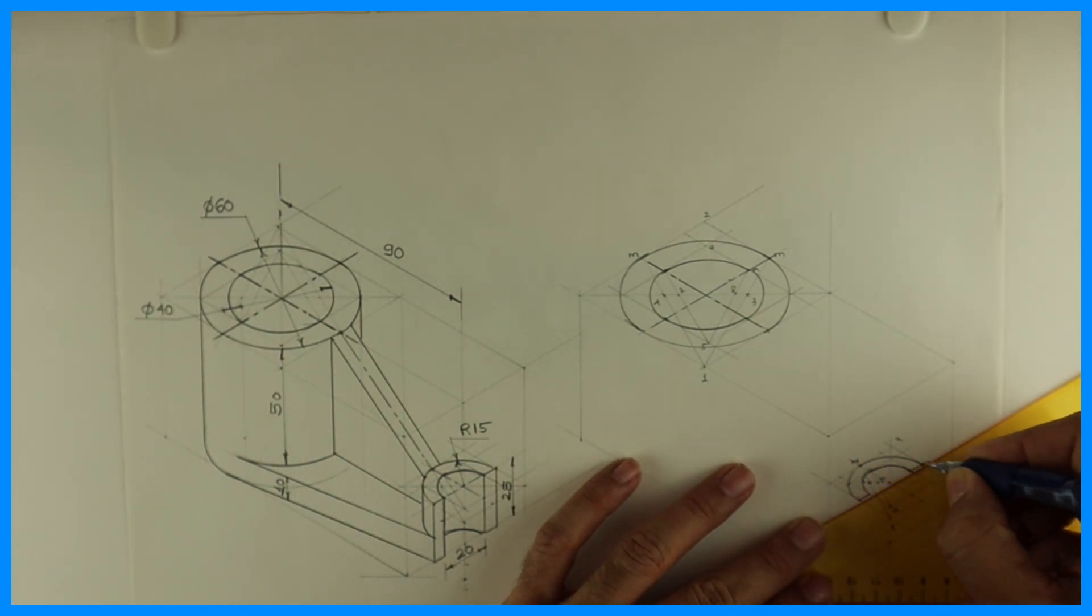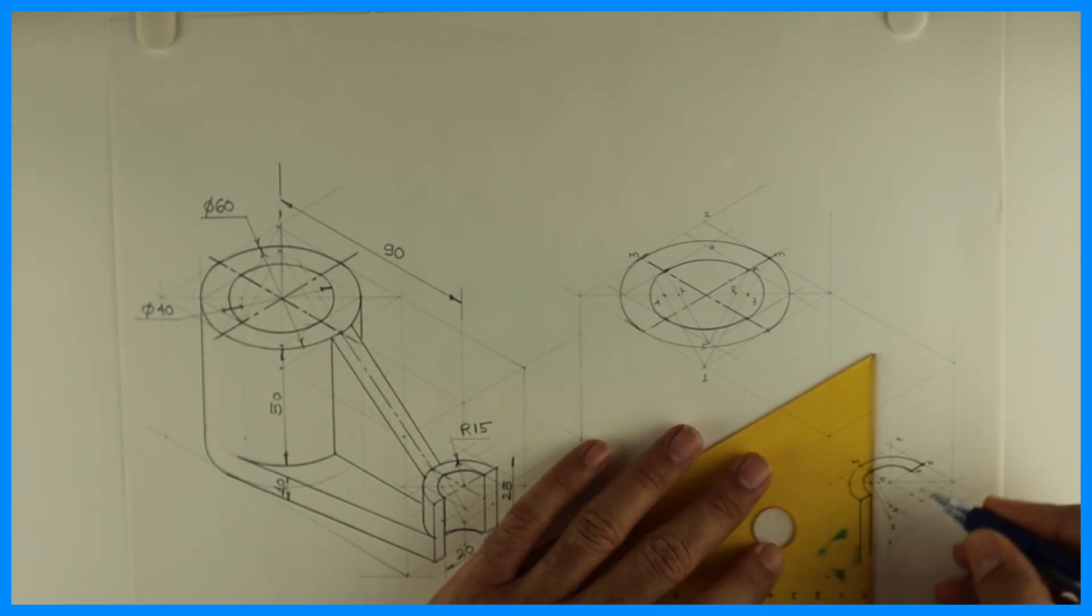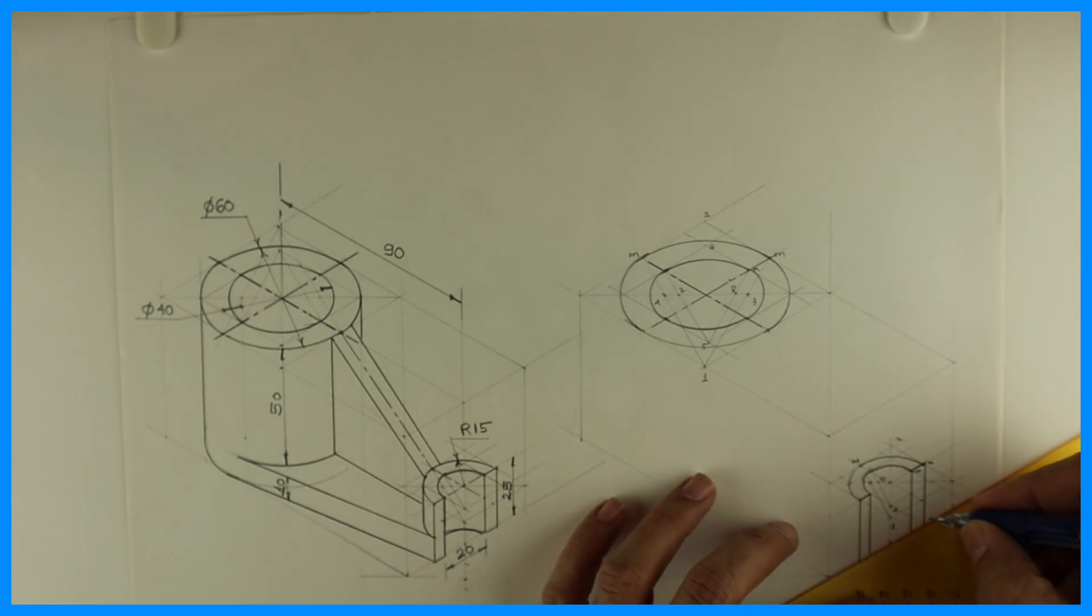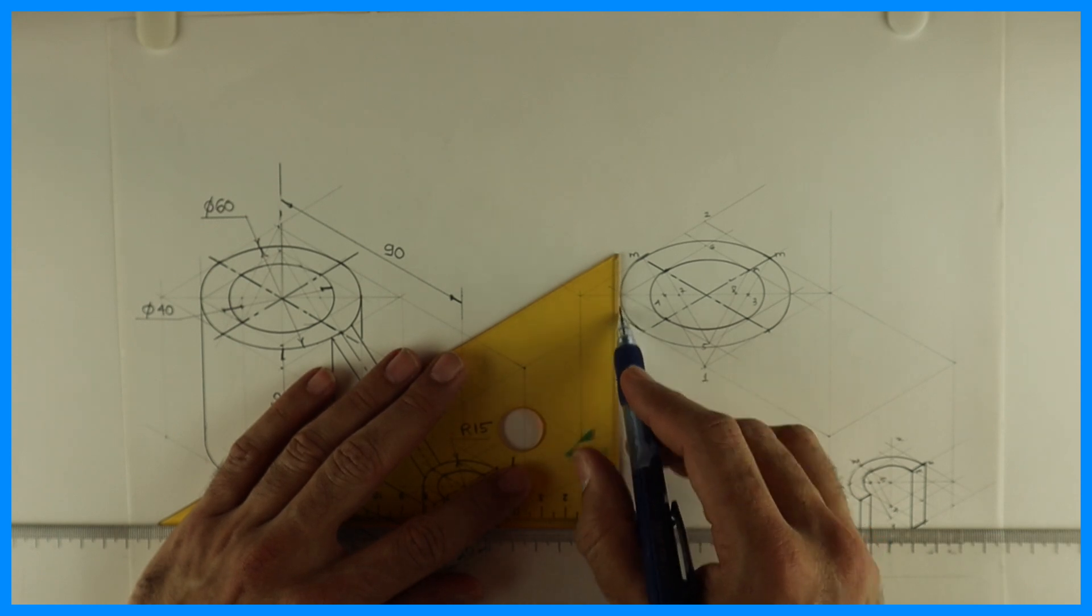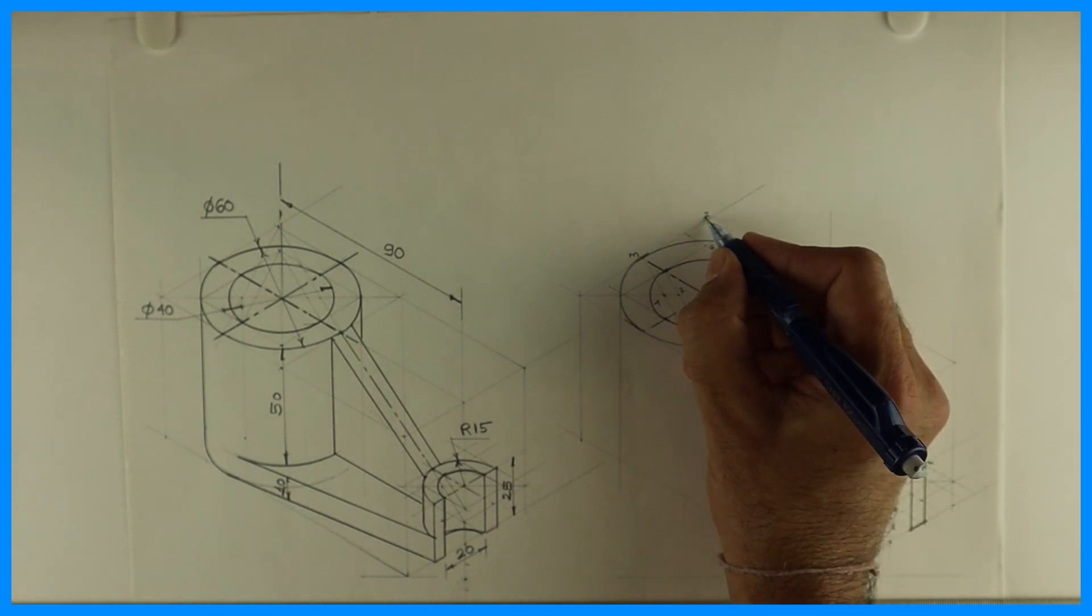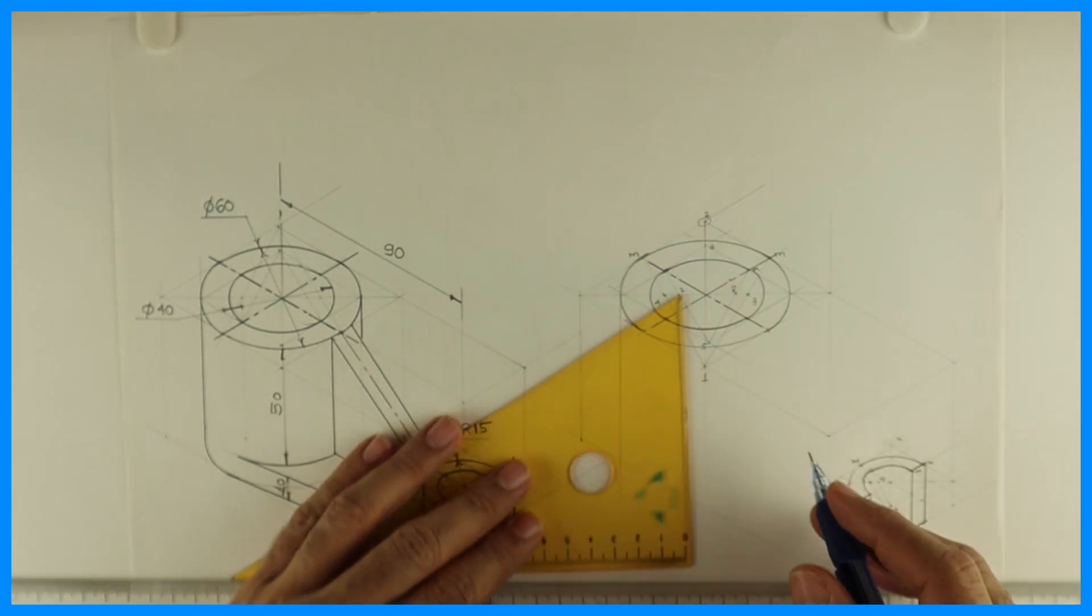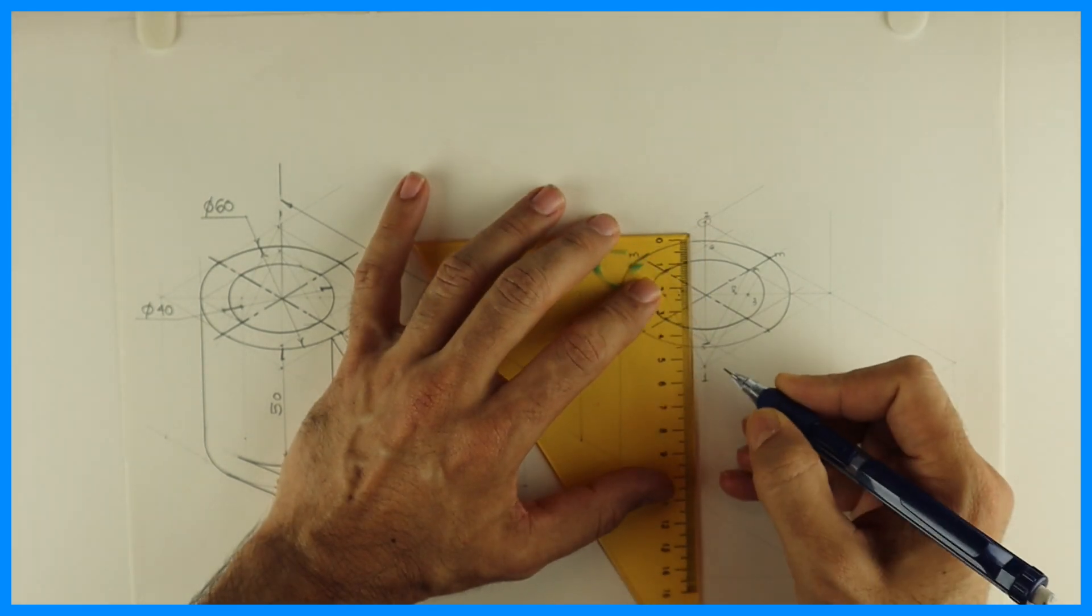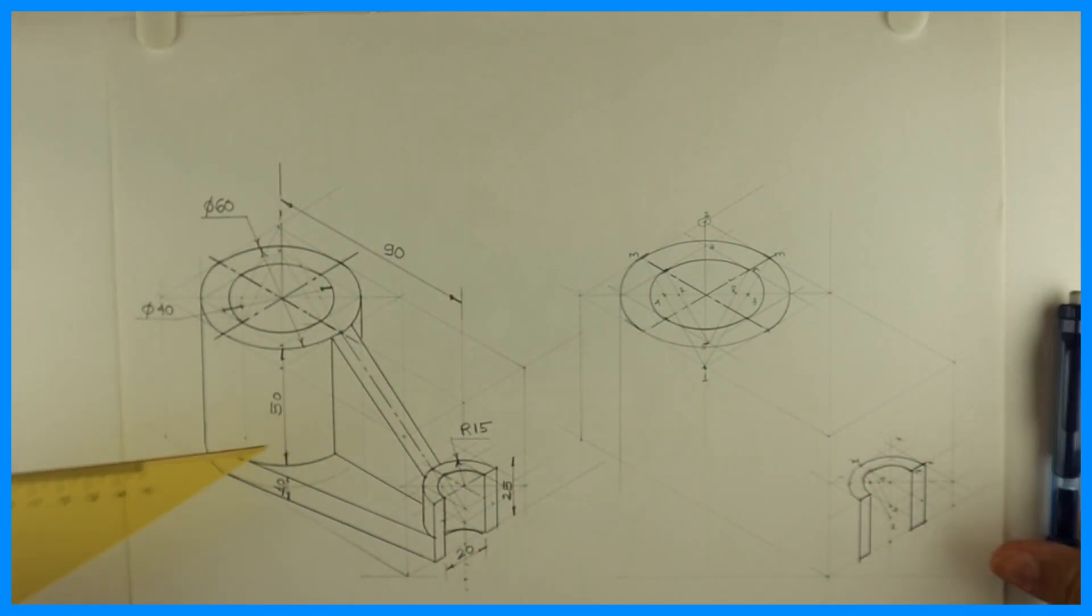Now draw this line dark. See this 50 plus 10, 60. So what we need to do is take this point two down by 60.